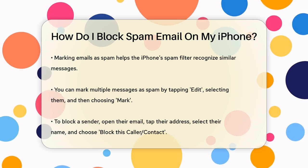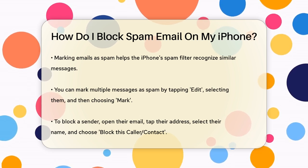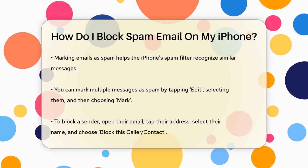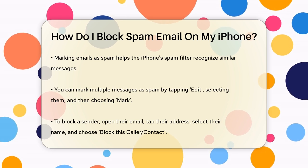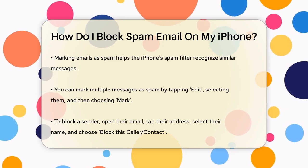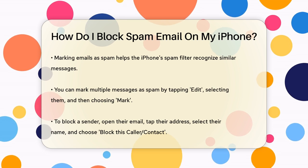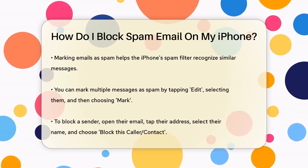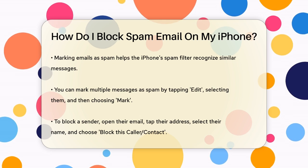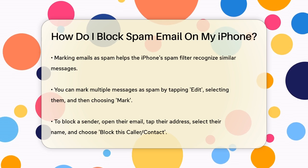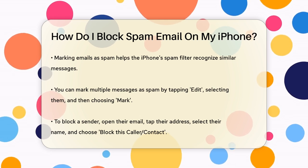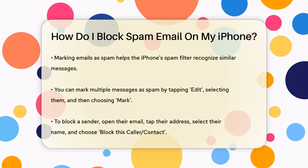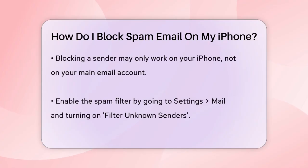Another effective way to block spam is to block the sender. If you keep getting spam from the same sender, you can block them. Open the email from the sender, tap their email address at the top, then tap their name, and finally select Block this Caller Contact. However, keep in mind that this might only block the sender on your iPhone and not on your main email account accessed through a computer. You may need to block the sender separately on your email provider's website.